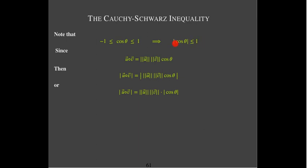This is where I'm going to make use of the inequality that the absolute value of cosine theta is less than or equal to one, which means that the left-hand side has got to be less than or equal to the right-hand side. So the absolute value of u dotted with v is always less than or equal to the length of u times the length of v.